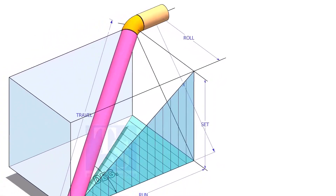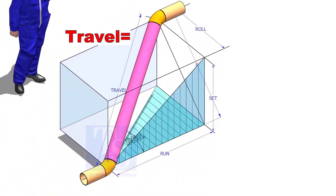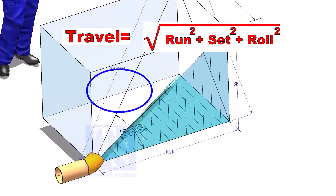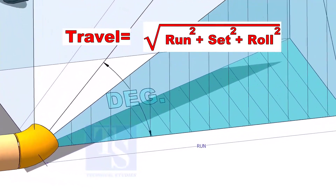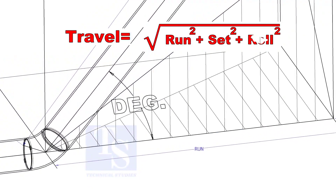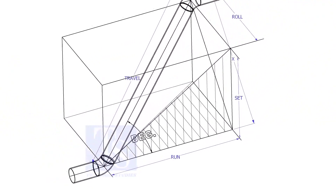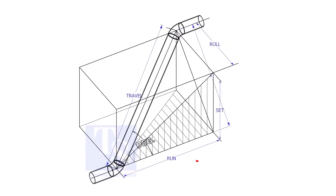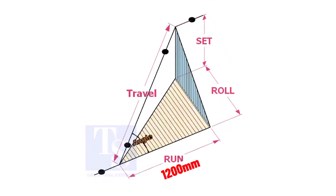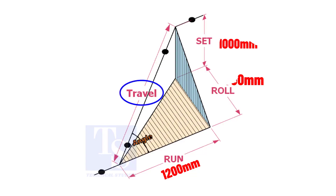The formula to calculate the travel length is the root of the sum of the run, set and roll. Assume that the run is 1200 mm, set is 1000 mm and the roll is 800 mm. Calculate the travel length.